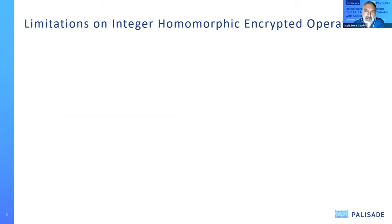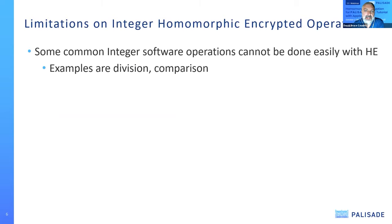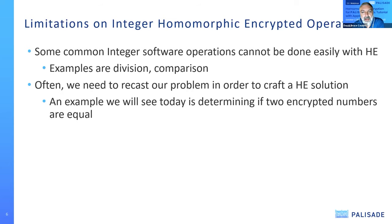Some common software operations cannot be done easily in homomorphic encryption. For example, division and comparison — two things we do all the time — are not easily done within HE primitives, and we usually use some kind of approximations. So often we need to recast our problem in order to craft a homomorphic encrypted solution. An example we'll see today is determining if two encrypted numbers are equal, and we'll be doing that using the tools we have available.